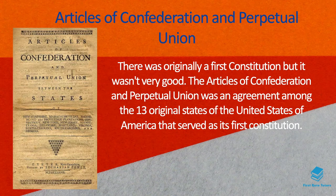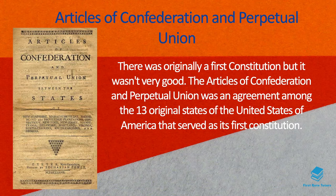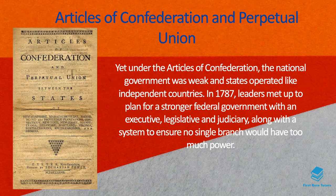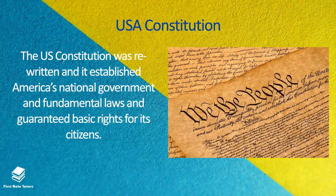When it comes to the general framework of the government, it's been influenced by two constitutions. The first is the Articles of Confederation and Perpetual Union. This was an agreement among the 13 original states and served as the USA's first ever constitution. However, under this constitution the national government was quite weak and the states essentially operated like independent countries. So in 1787, leaders met to plan for a stronger federal government with an executive, a legislative, and a judiciary, along with a system to ensure no single branch would have too much power.